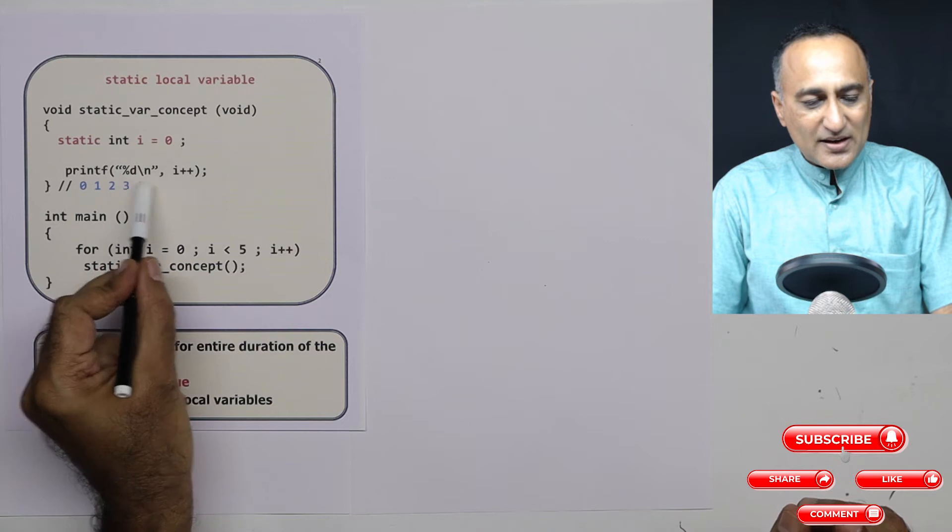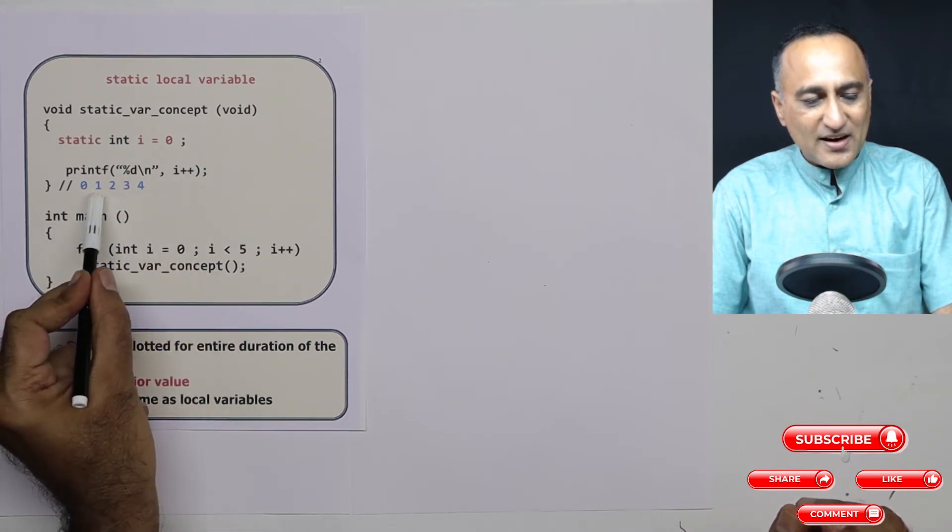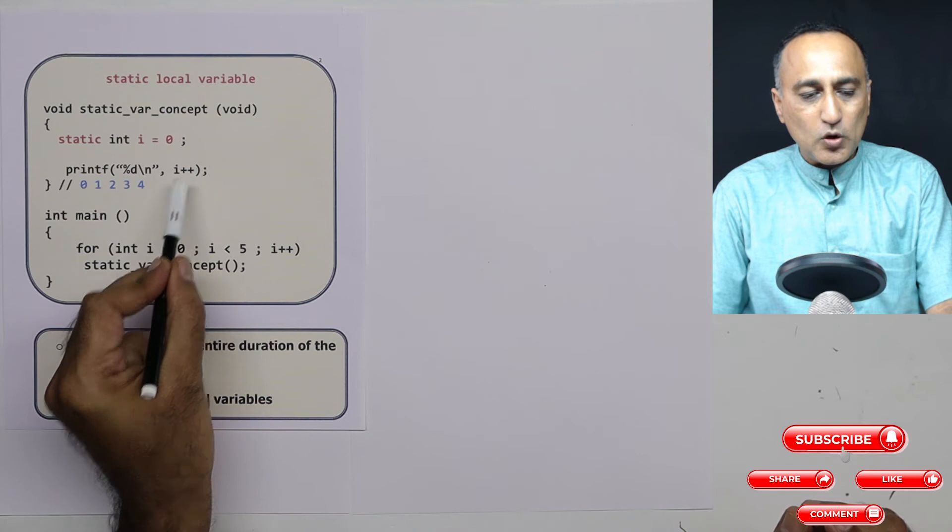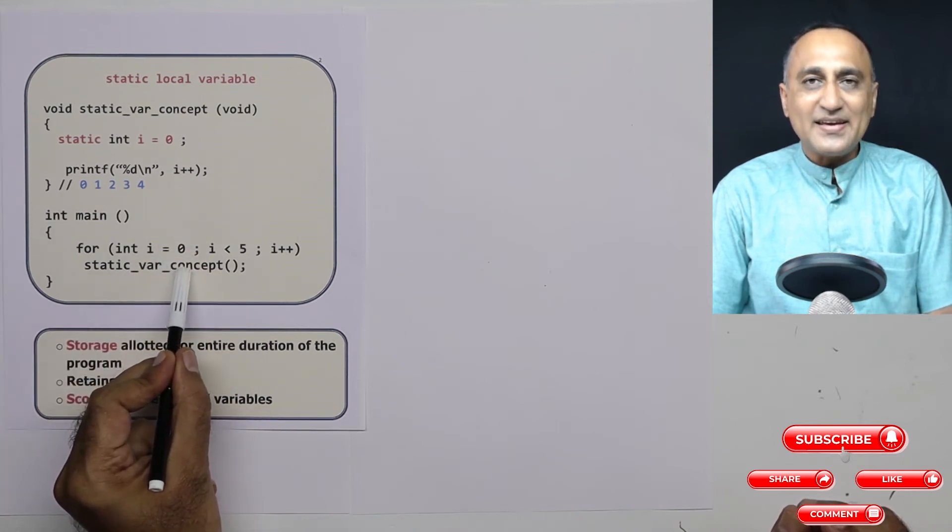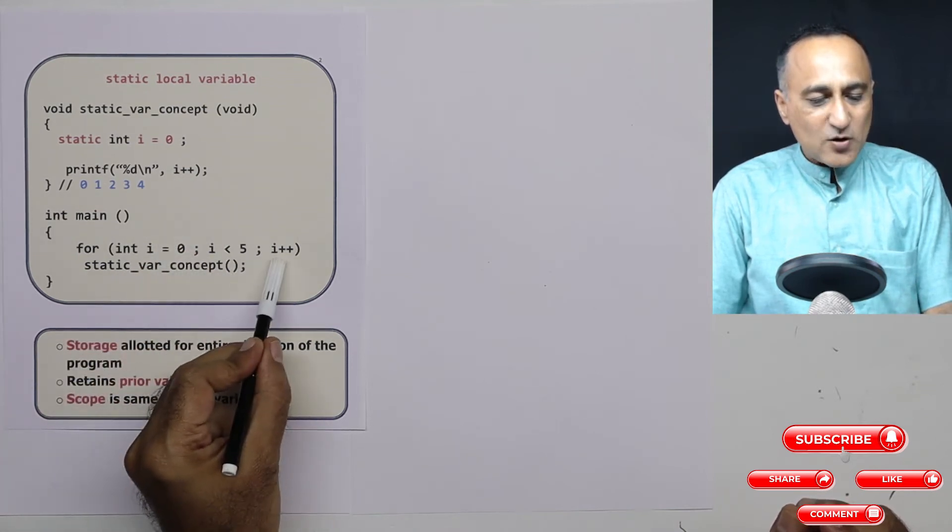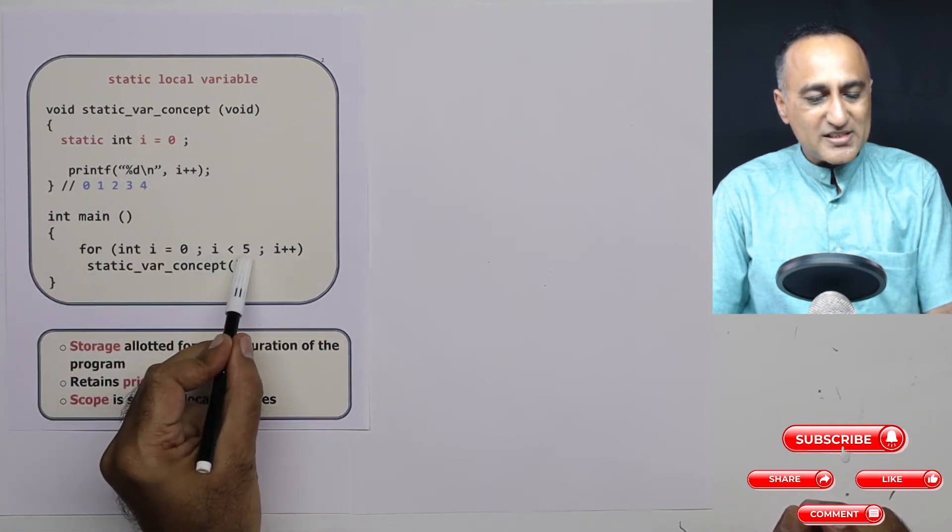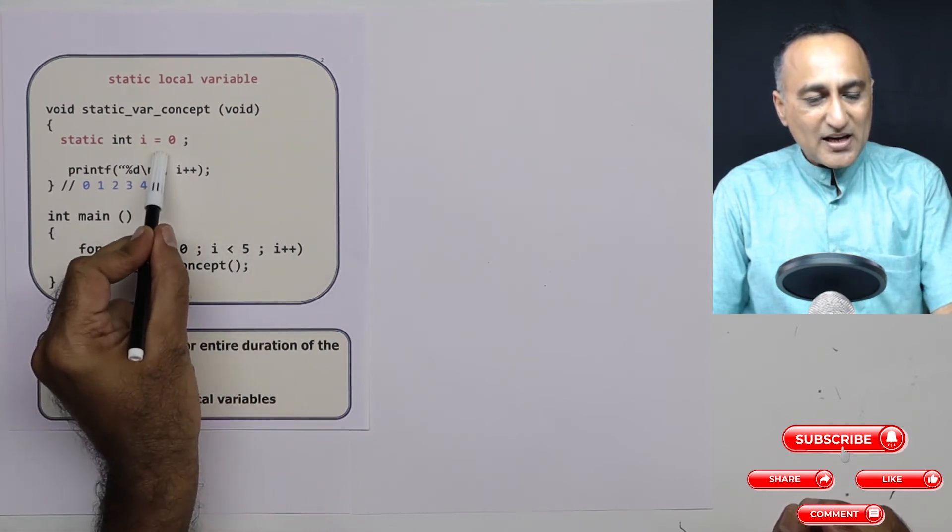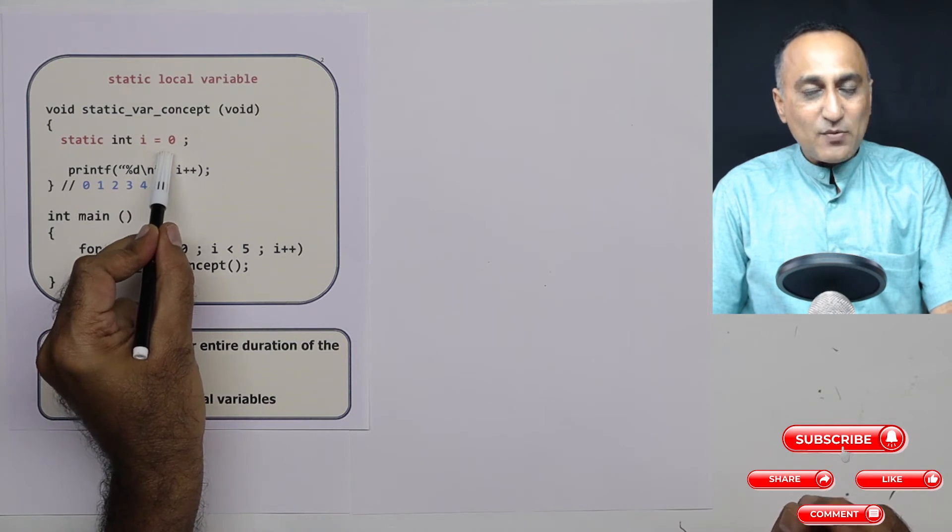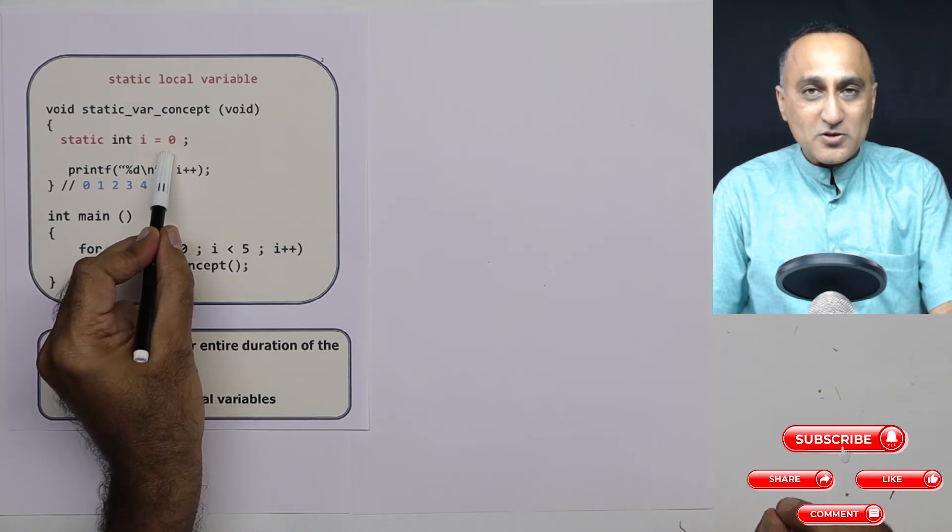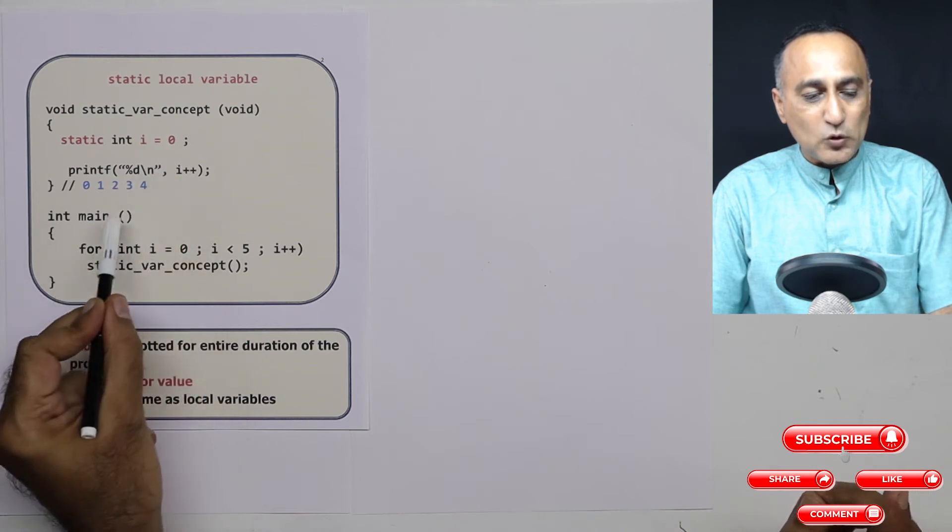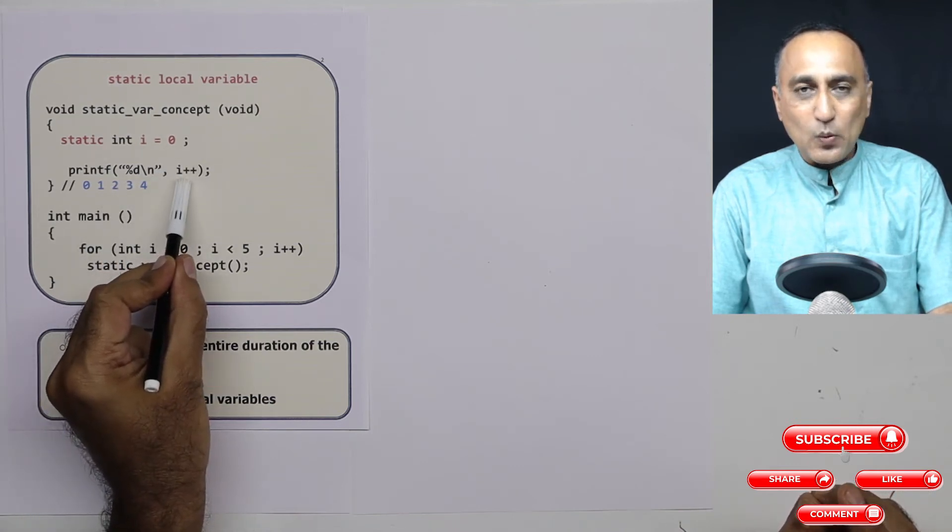Now I am going to come back here, i is now two here, this i is different from this i, this i is also two, two is less than five. Now when I come back here, i will get the old value. From zero, it had become one, one it had become two. So it will print two and increase i by one.